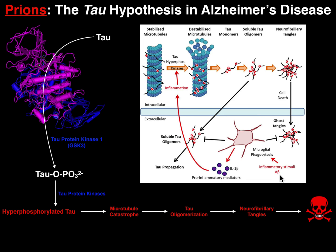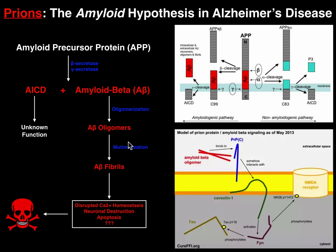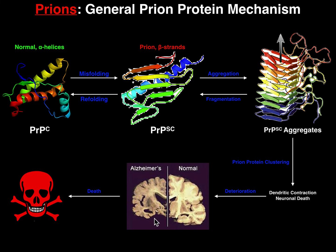Amyloid beta is also an inflammatory stimulator of microglial cells, inducing release of interleukin-1-beta and more inflammation, which activates kinases leading to further tau phosphorylation. Given the crosstalk between both pathways, it is likely a combination of both drives Alzheimer's progression. Regardless of which pathway predominates, the outcome is apoptosis — cell death of neurons, particularly in the cerebral cortex.